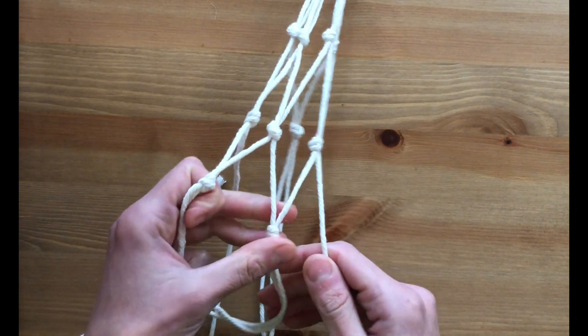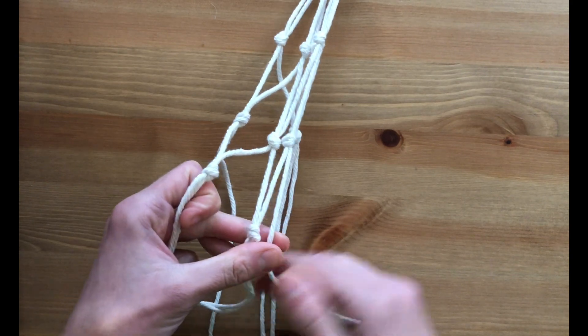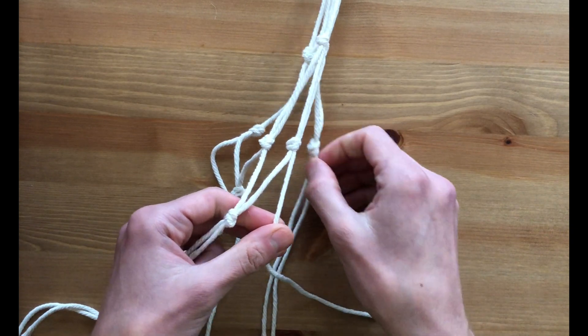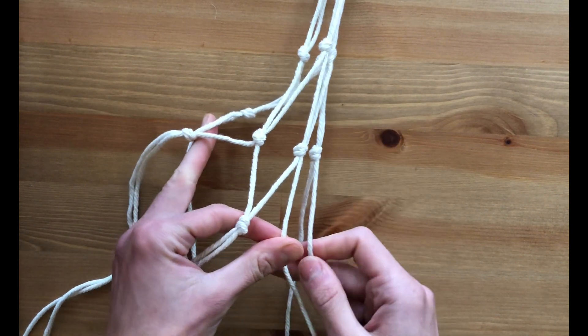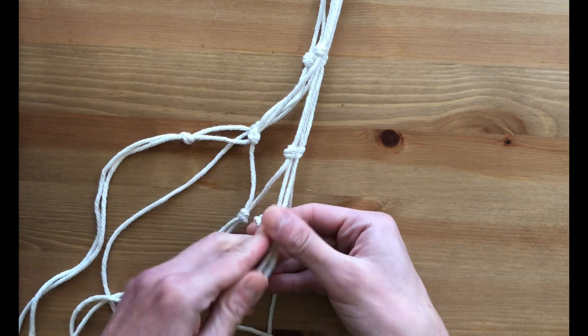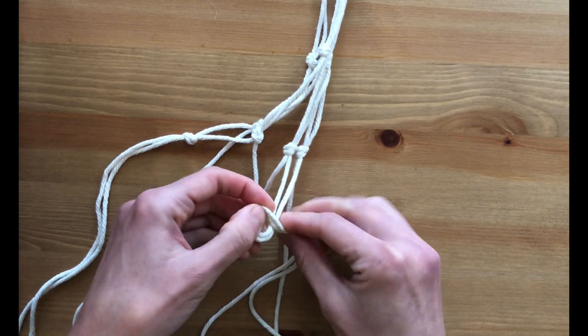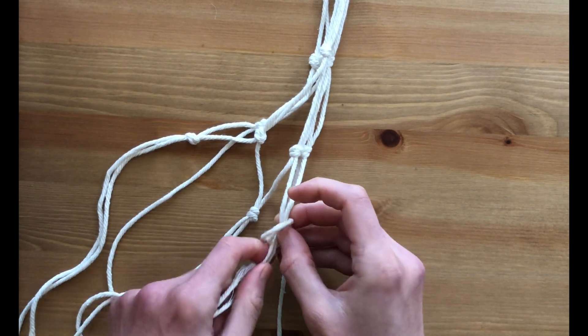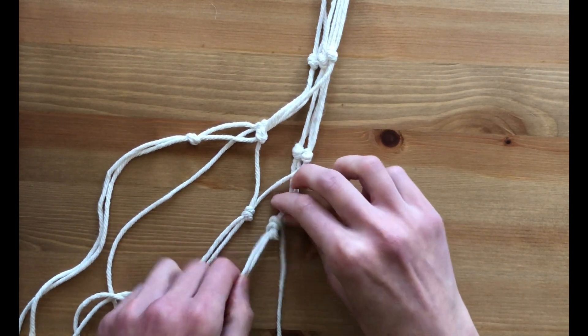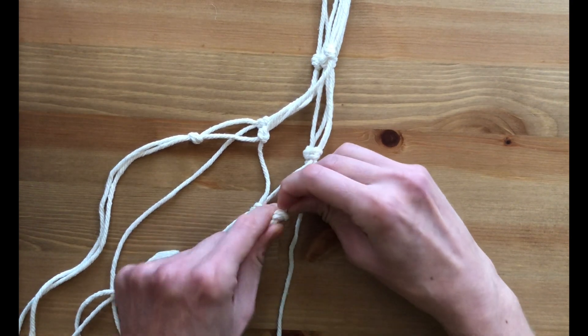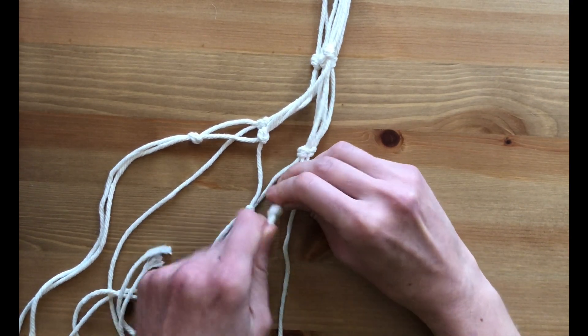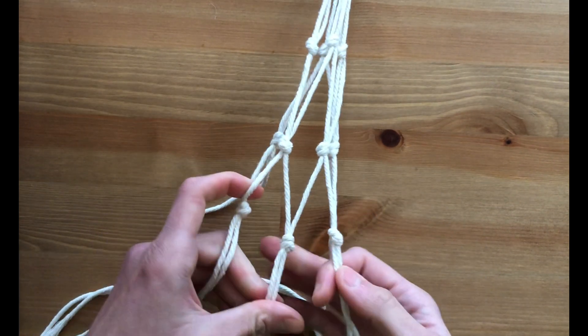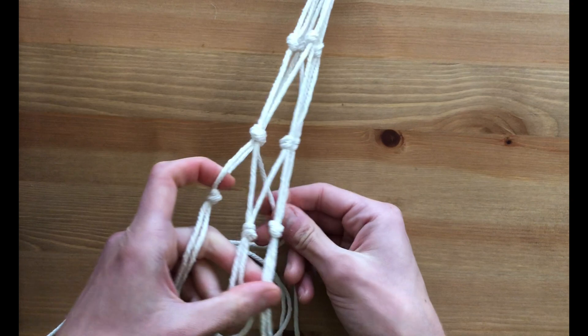You might want to lift it up just to see, to make sure you're using the strings that are neighboring, that you're tying them together and not ones that are across the way from each other. So I have three knots there, and then the last one will be these two strings under here.